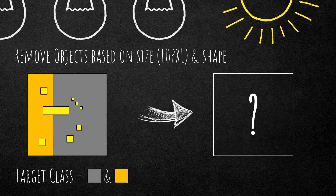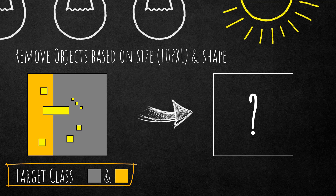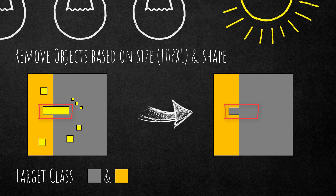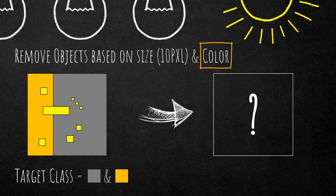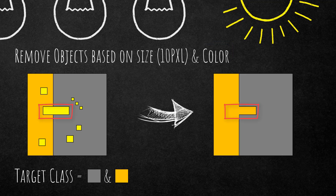Now a more difficult example. This one has two target classes in the background — orange and gray — and we want to remove image objects smaller than 10 pixels based on shape. The interesting case is the large yellow object in the center: it shares its border with both orange and gray, but approximately 60% of its border is with the gray class, so it merges into gray. If we change the setting from shape to color, the result is different — the large yellow object dissolves into the orange class because it is spectrally more similar to orange than to gray.